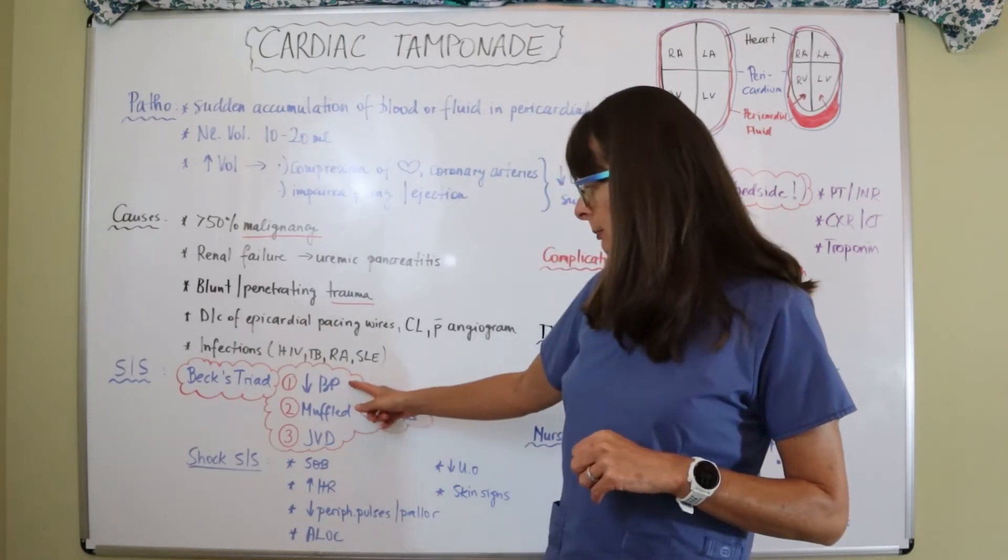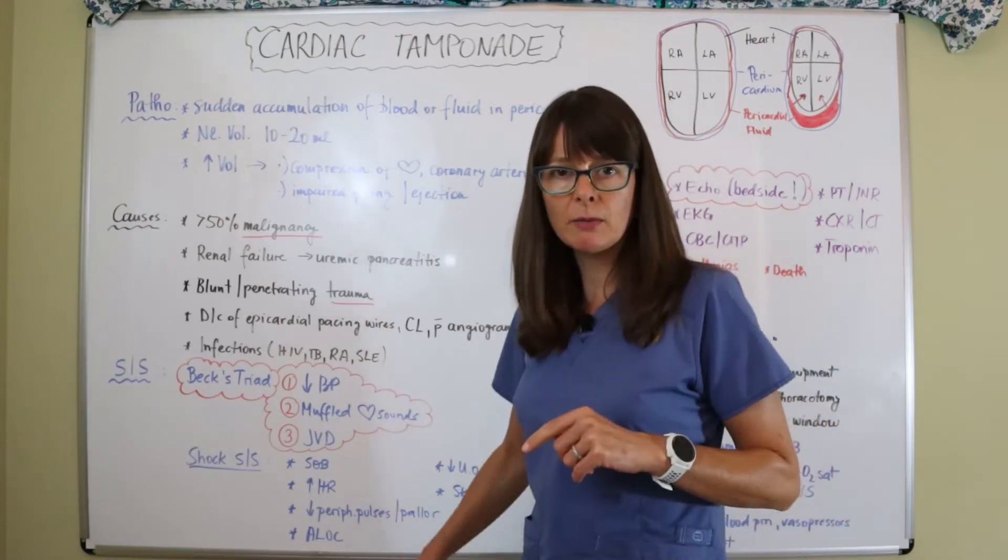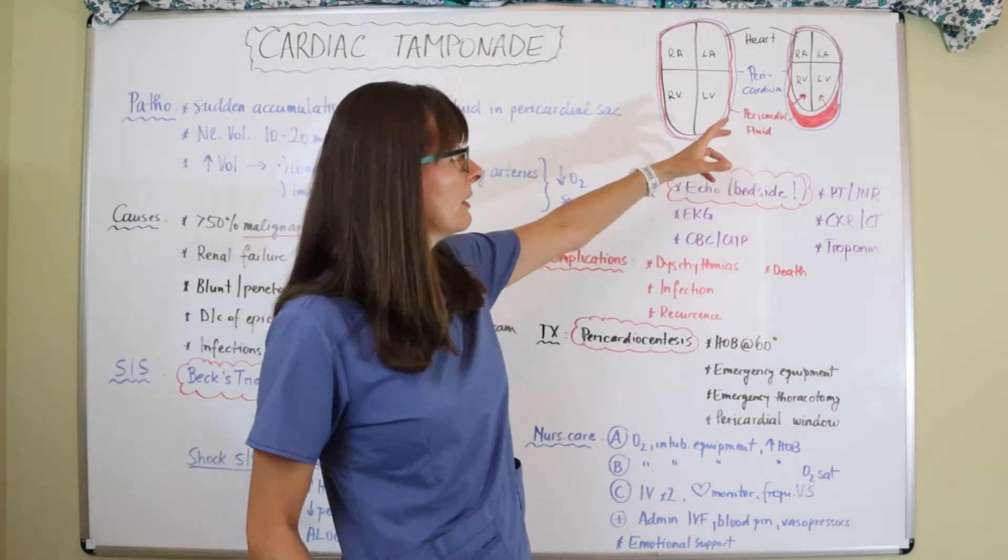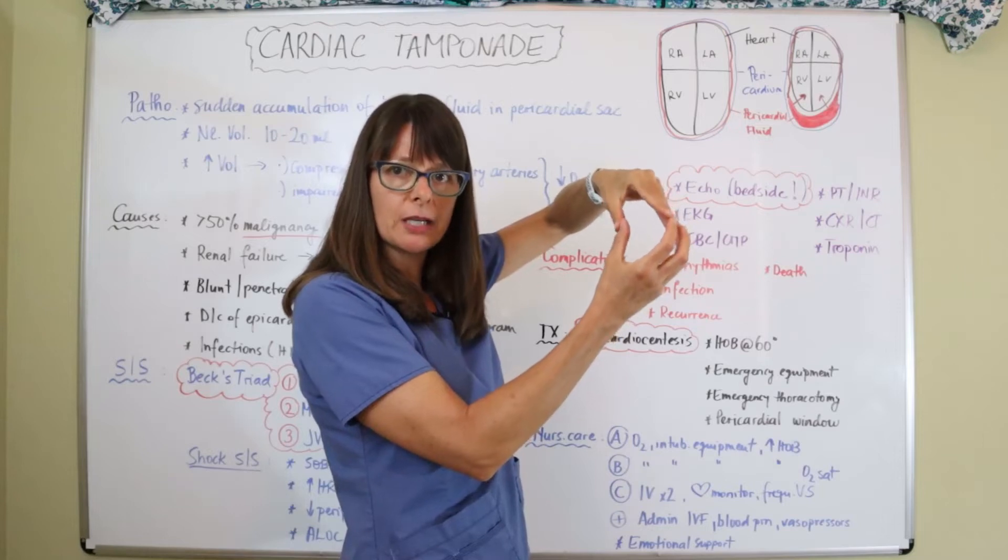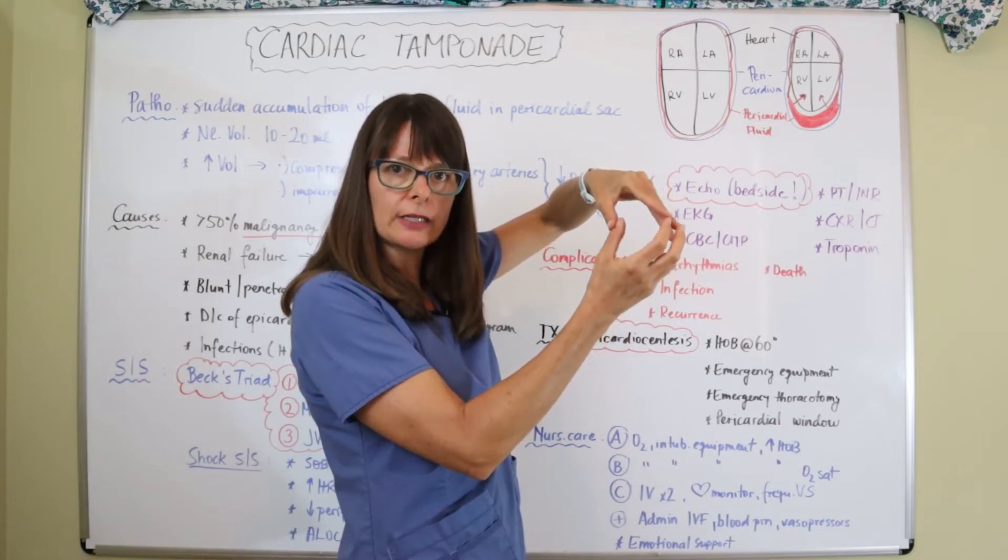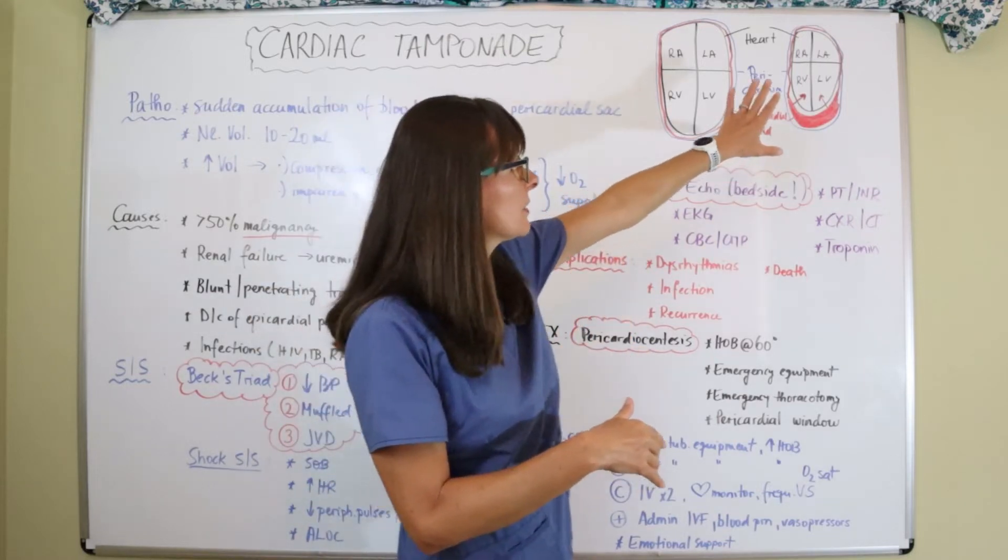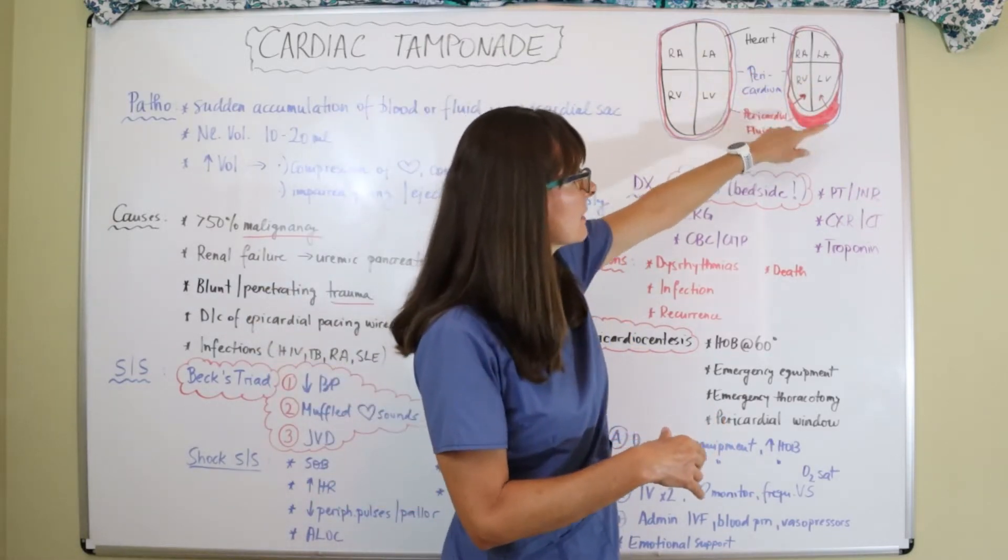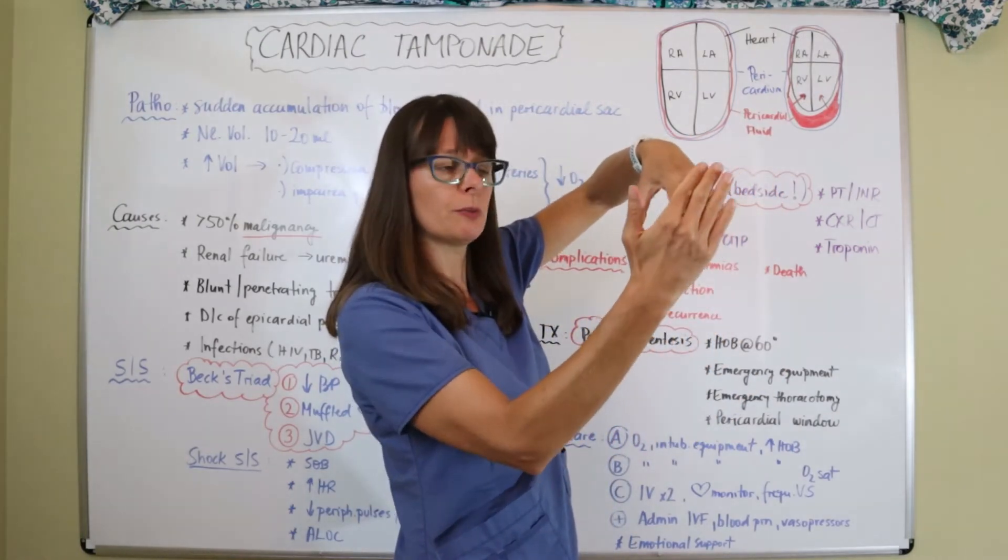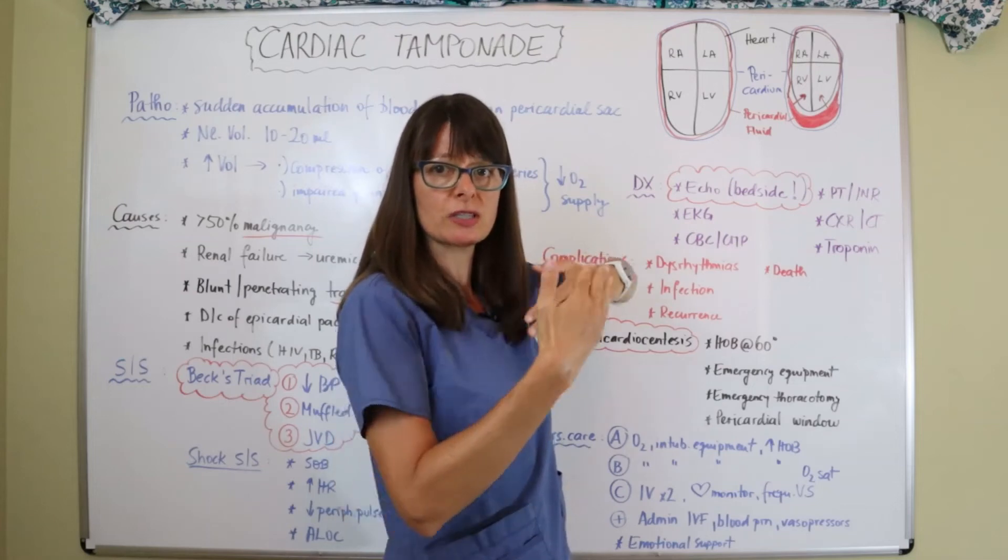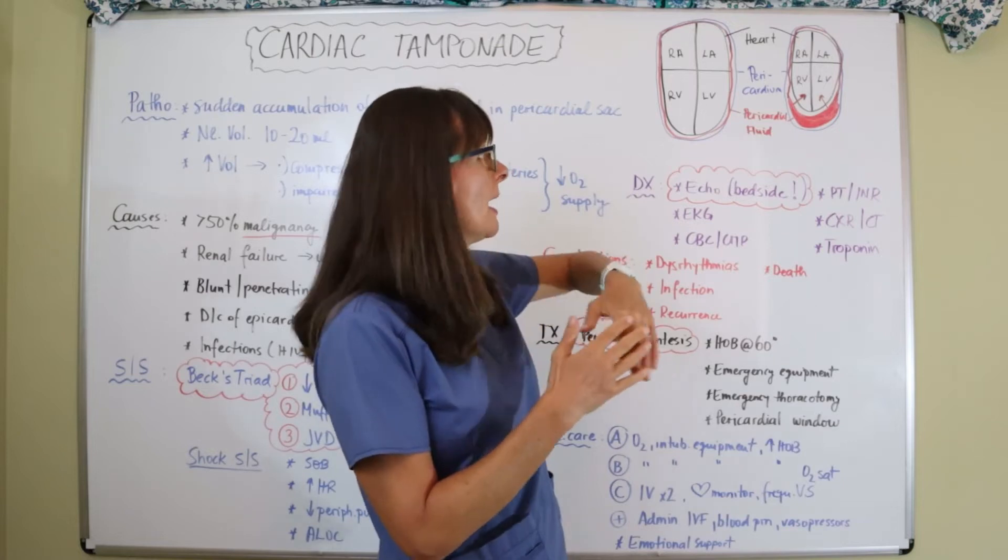Signs and symptoms, very very important, it's called Beck's triad and there are three things that'll happen: decrease in blood pressure, muffled heart sounds, and JVD. Let's think back about what's happening here. If the heart muscle can't expand and contract the way it does, it only has an ability to squeeze very little, not produce that cardiac output. Of course the blood pressure will drop. If the heart muscle itself is bathed in this cardiac fluid, if you put your stethoscope on the patient's chest you're going to be listening through that fluid so the heart sounds will be muffled.